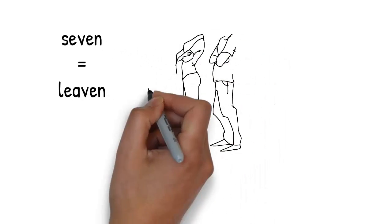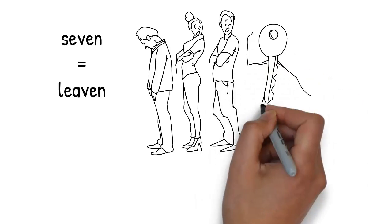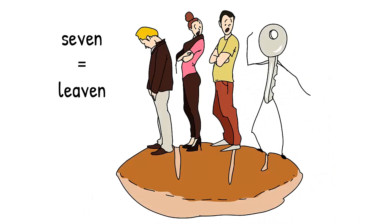As the key and the people stand in line, they suddenly start to rise. Leaven is something like yeast that makes dough and bread rise, and they're standing on leavened bread. Leaven rhymes with 7.